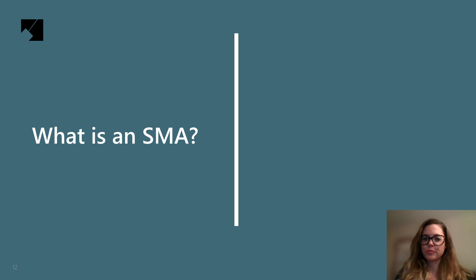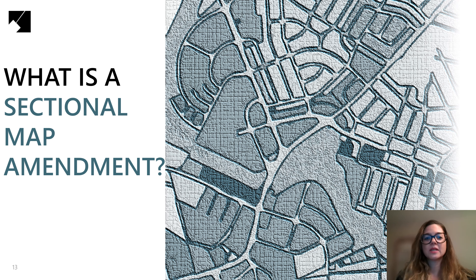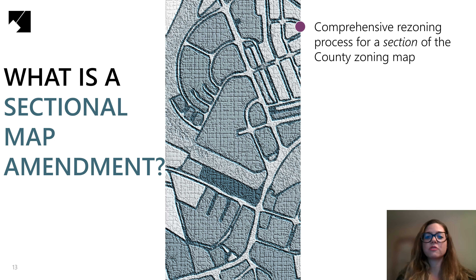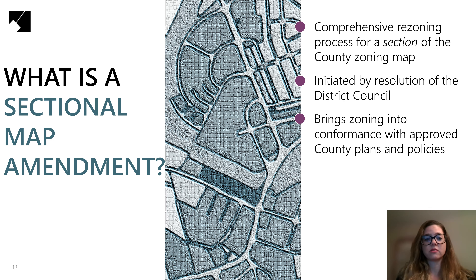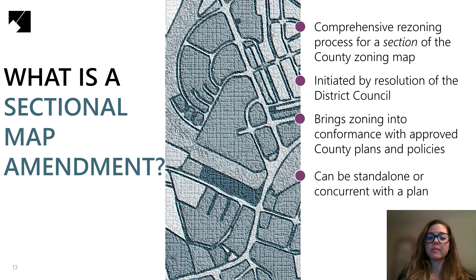Now let's get back to that Sectional Map Amendment — specifically, a concurrent sectional map amendment. Concurrent means simultaneous, or at the same time. The comprehensive rezoning process, also known in Prince George's County as the Sectional Map Amendment or SMA process, allows for changes to a section of the overall county zoning map in order to bring the zoning of properties in conformance with approved county plans and policies. By definition, it's a comprehensive rezoning of one or more properties pursuant to and intended to implement the recommendations of an area master or sector plan.